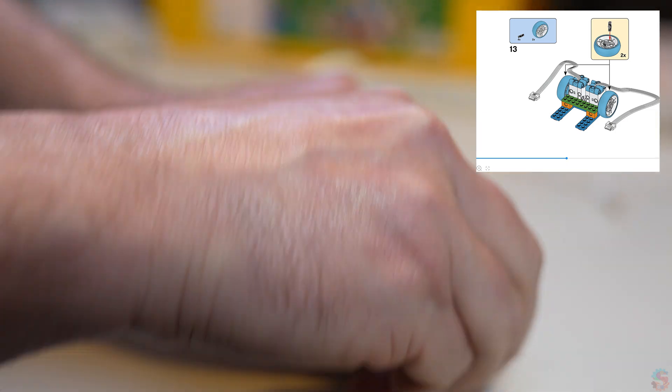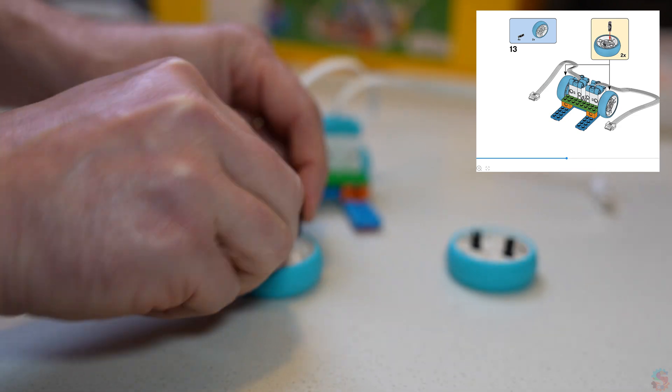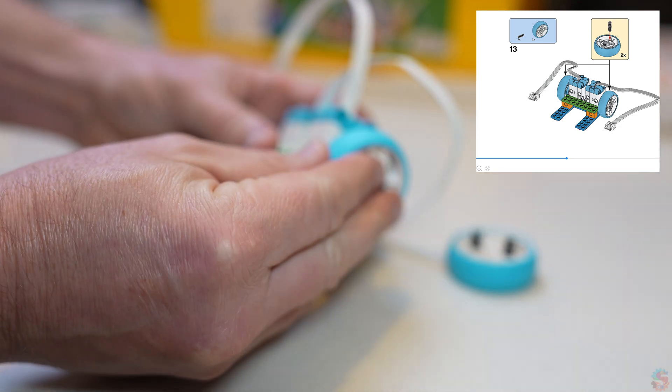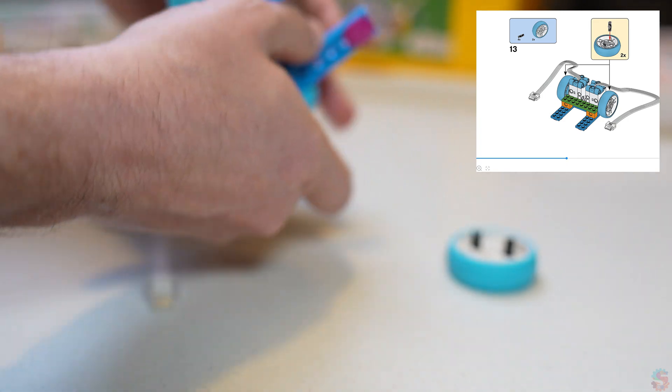Let's get our wheels out, and we want to use our big wheels in our Spike Essential kit. We'll put two black pins into each wheel and attach them directly to our motor on the blue part that rotates.